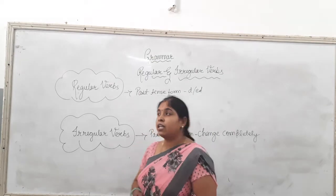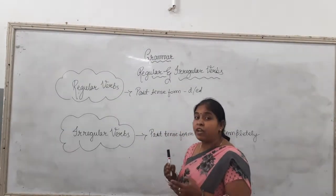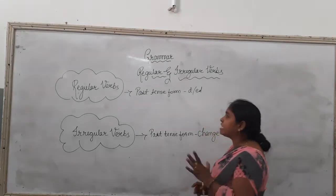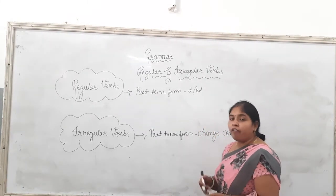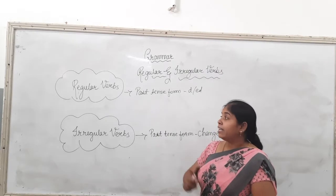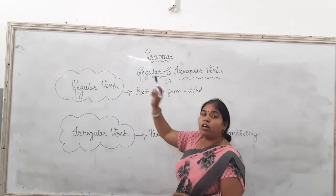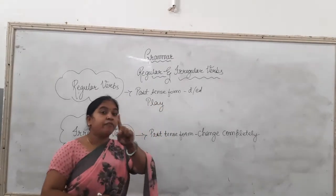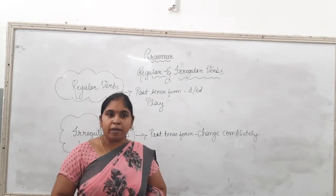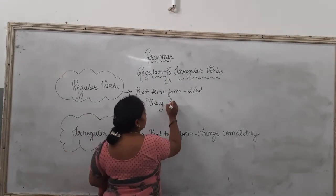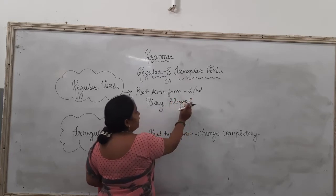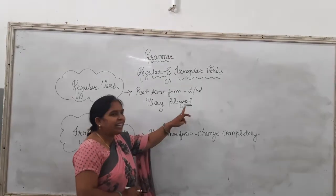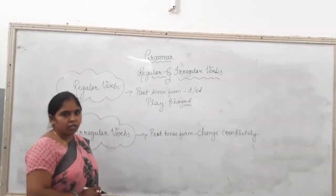What are regular verbs? Regular verbs are the verbs where, when we talk about the past tense form, we add D or ED to make the past tense form of the verb. For example, play — P-L-A-Y — is the first form of the verb. The past tense form of play is played, where we add ED. So play is a regular verb.